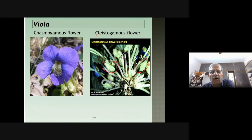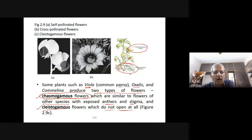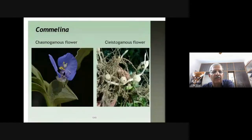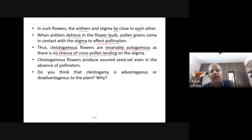In cleistogamous flowers, the anthers containing pollen come in contact with the stigma. Examples include Viola, Oxalis, and Commelina, which produce two types of flowers: chasmogamous (open) and cleistogamous (closed). Autogamy is easily observed in cleistogamous flowers. When anthers dehisce inside the flower bud, pollen grains come in contact with the stigma to effect pollination.